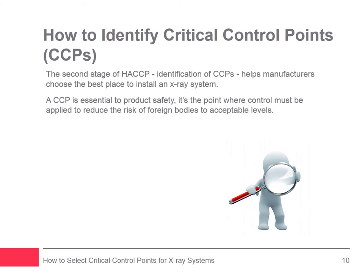A CCP is a step or process that's essential to product safety — it's the point at which control must be applied to reduce the risk of foreign bodies to acceptable levels. The traditional method of determining CCPs is to work through a decision tree. However, although the methodology is rigorous, it's not always the most appropriate for capital investment items such as an x-ray system. Other factors such as cost effectiveness and practicality are just as likely to influence the decision of whether to purchase an x-ray system and where to place it. The reality of manufacturing is that a risk-based balance should be established which considers costs and complexity against total risk elimination.